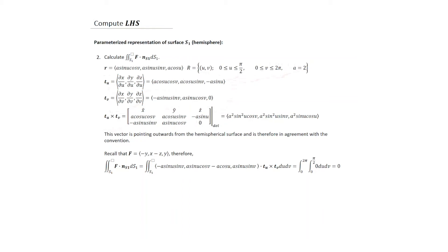Recall that F has a specific form, so we replace x's, y's, and z's with the parametrized values obtained from the spherical parametrization. All of those are substituted in to form the expression for F. Taking the dot product of F with T_u × T_v, you find a value of zero — so no integration is needed since the result is zero regardless.